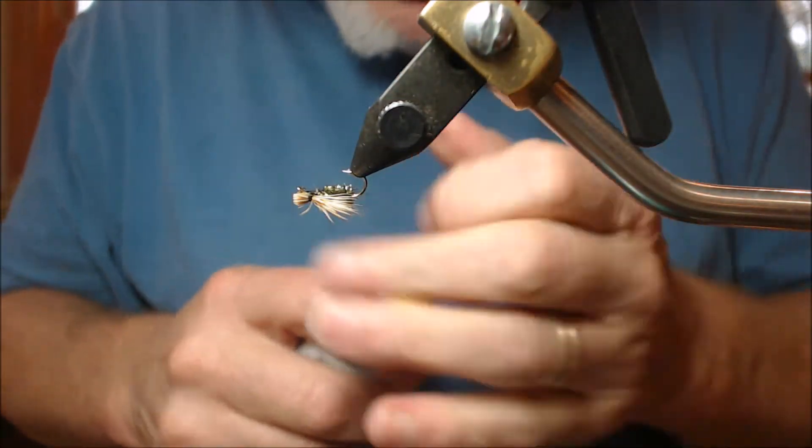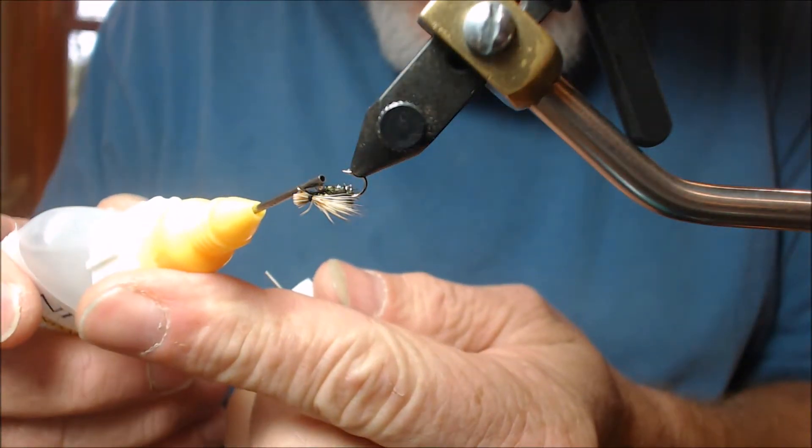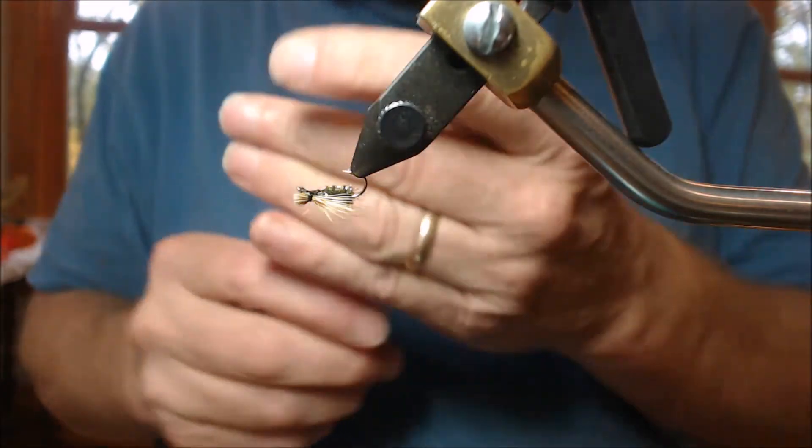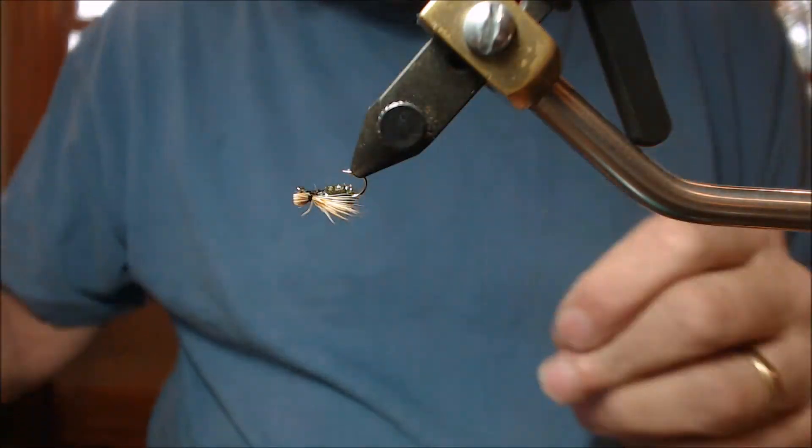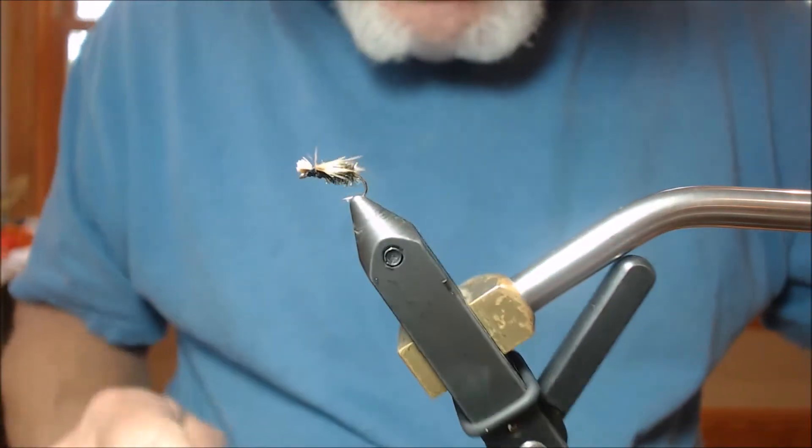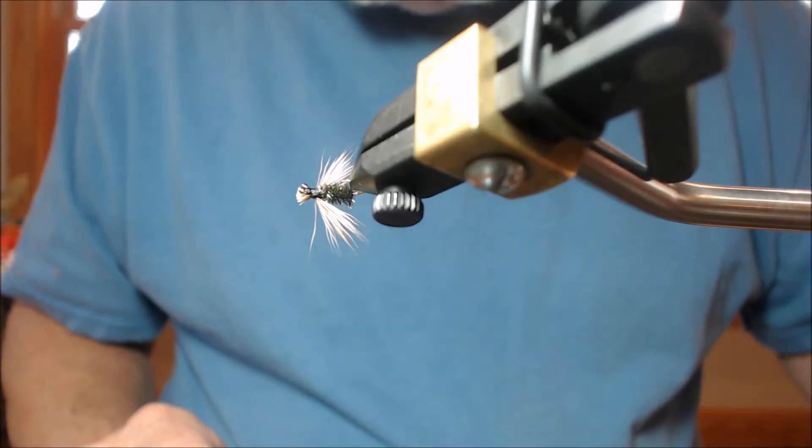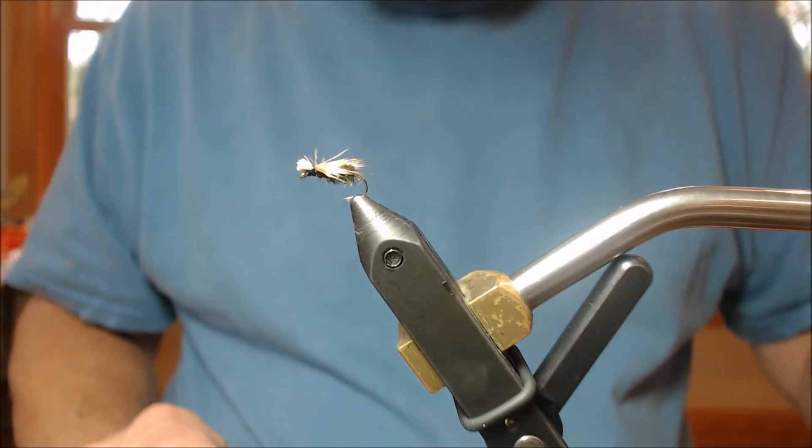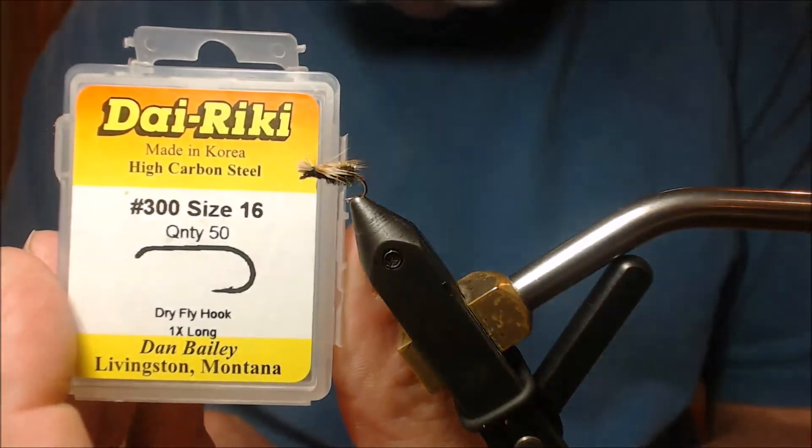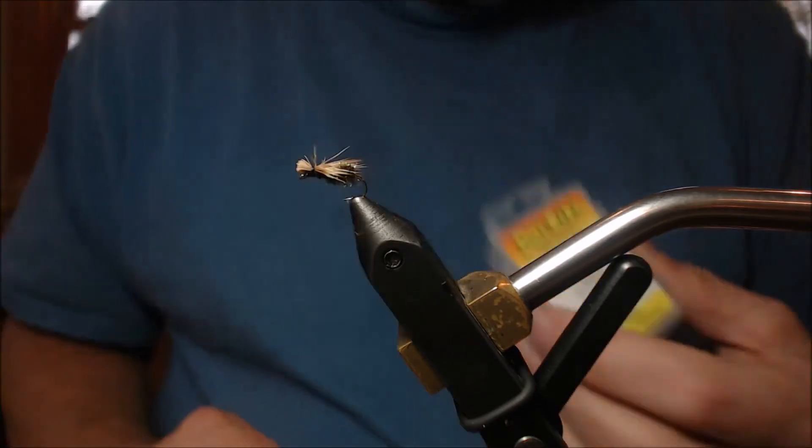This is a great, easy pattern to tie. As you can see, it doesn't take many materials. It's not my pattern. I think it's called a BP spent wing caddis, or BPS, I'm not sure. But it's really cool, easy to tie, floats in the film. And when they're eating these things, this is a great pattern. I tied this on a 16 here, but I recommend 18s. I wouldn't go any smaller.